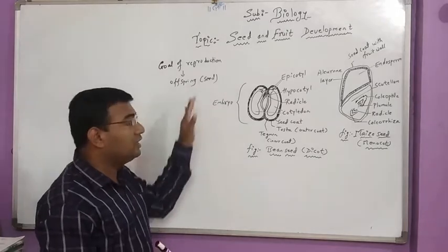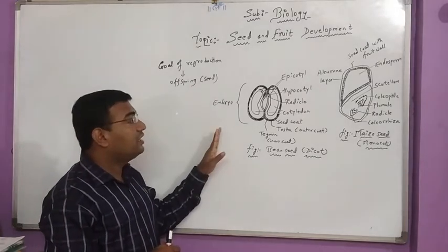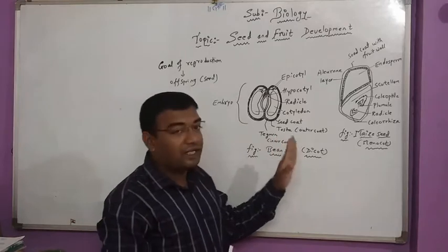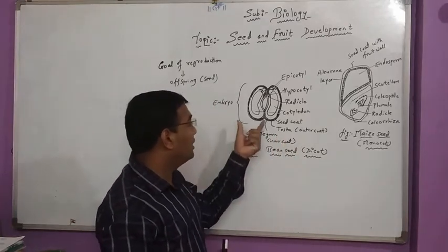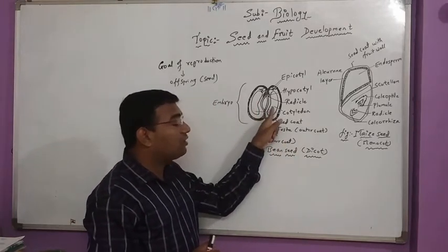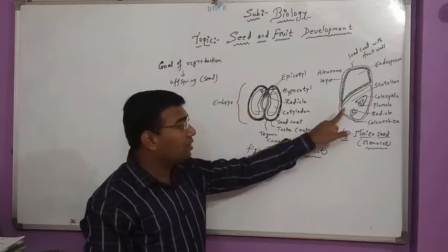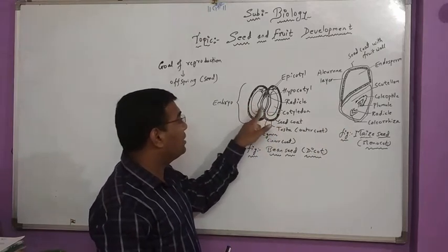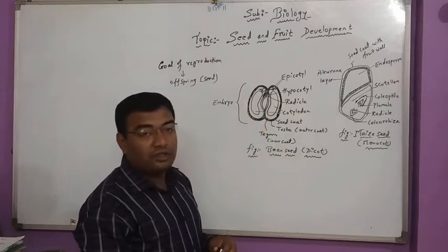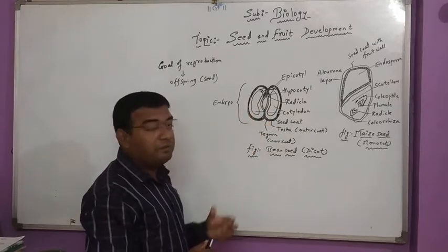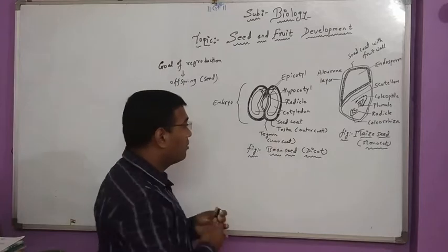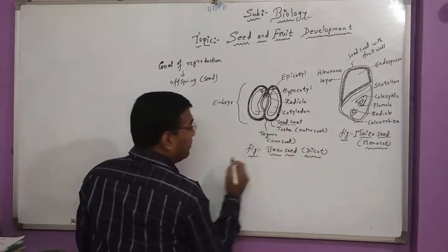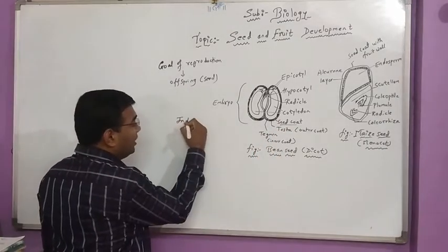So this is how the seed starts developing. Here when we are seeing the difference between the monocot and dicot plants, we should know that in dicot we are having two different cotyledons, but in monocot there is a single cotyledon. The seed is protected with the seed coat. So from where is the seed coat developed? The seed coat is developed from the integuments.